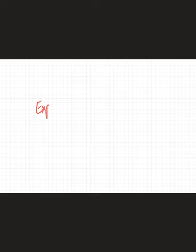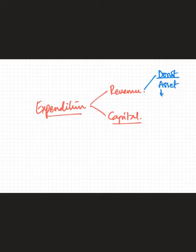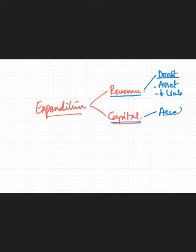When we gave the introduction to fiscal policy, I told you that expenditure in India is currently classified into two broad headings. One is revenue expenditure and the other is capital expenditure. Revenue expenditure is any expenditure that does not create an asset or does not reduce liability. Capital expenditure is something which creates an asset or reduces liability.